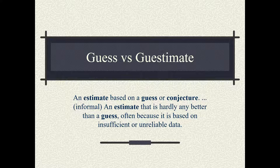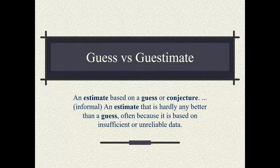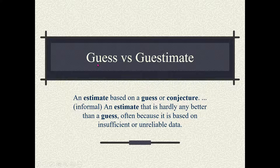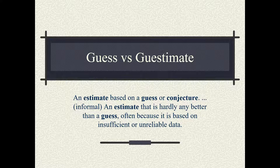In our daily life we keep on deriving an idea of how likely things are by using different methods. For example, one method is simply a guess. Let's say you are given an exam question in the form of an MCQ and you don't have any idea of what the answer is, so you will just guess. In guessing, it's all dependent upon luck and some unknown factors.